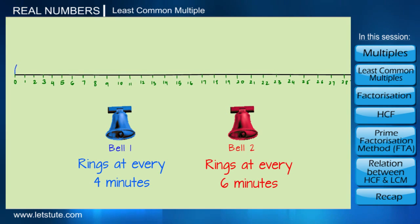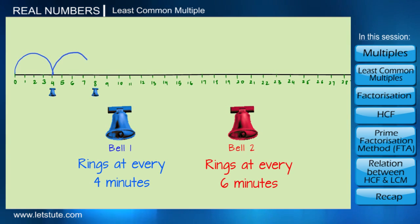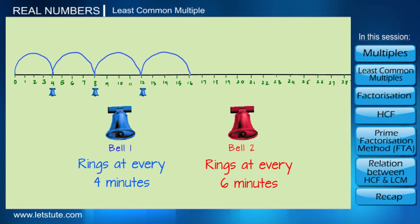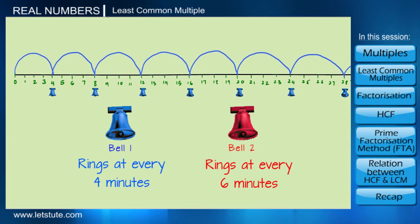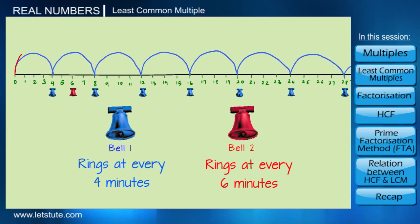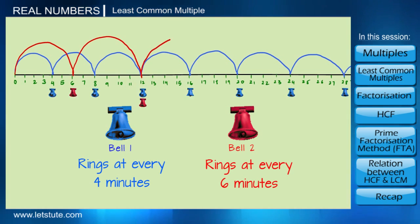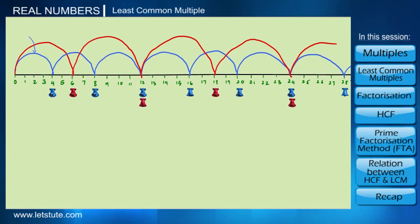Starting from zero, the first bell will ring at the 4th minute, then the 8th minute, then the 12th minute, and so on — at intervals of four minutes. The second bell rings every six minutes, so it will ring first at the 6th minute, then the 12th minute, then the 18th minute, and so on.